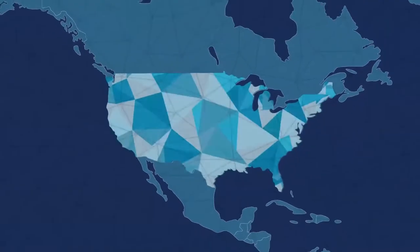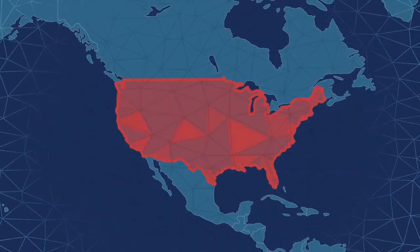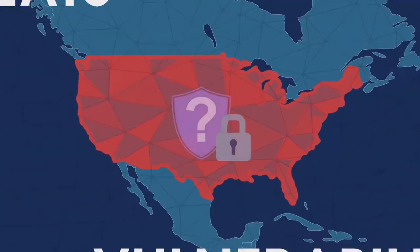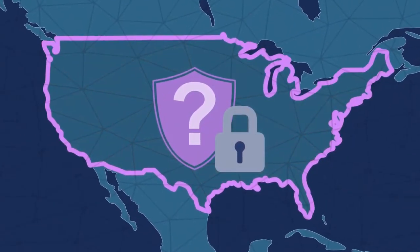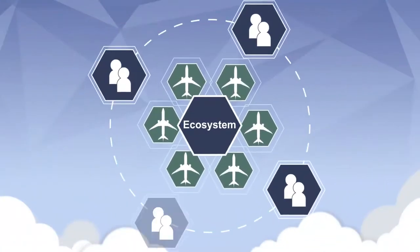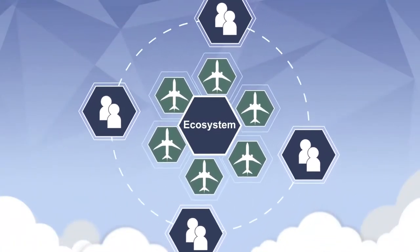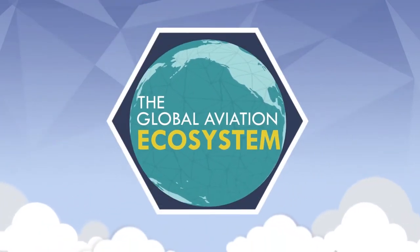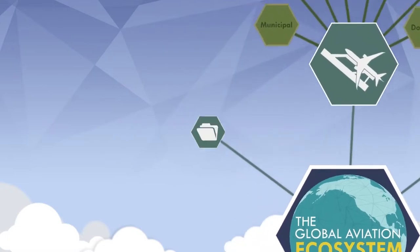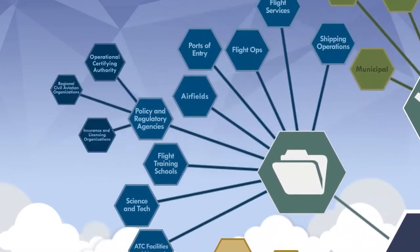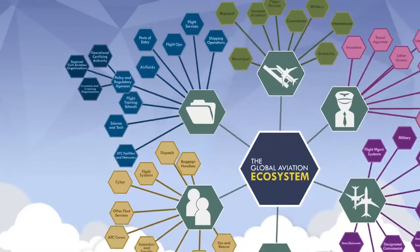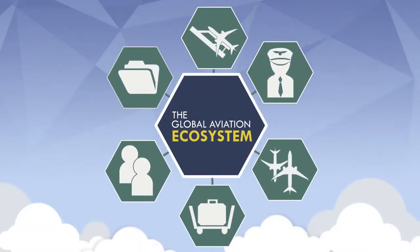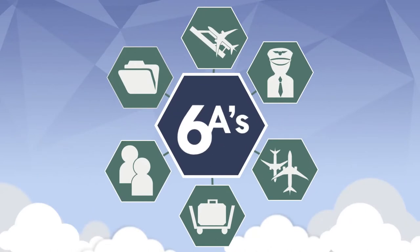Considering the complexity of the aviation domain and evolving aviation-related threats and vulnerabilities, how can we ensure that the interests of the United States are protected? To begin, we must understand the aviation ecosystem itself, including the components and entities from which it's formed. The Global Aviation Ecosystem is a term that refers to the extensive, multilayered network of intersecting elements with integral roles in the aviation domain. This network of elements is associated with six major groups, referred to as the six A's.